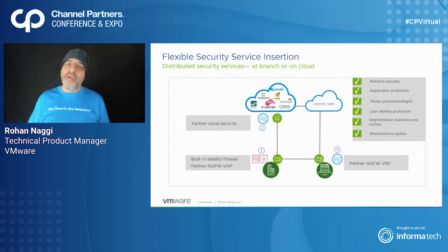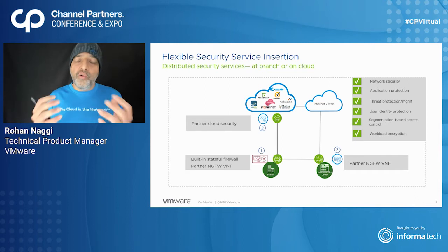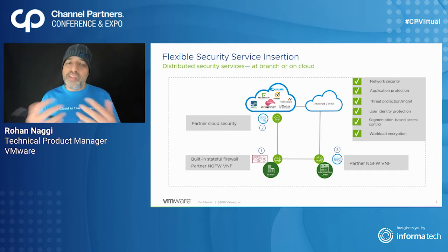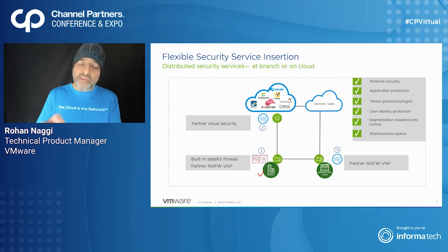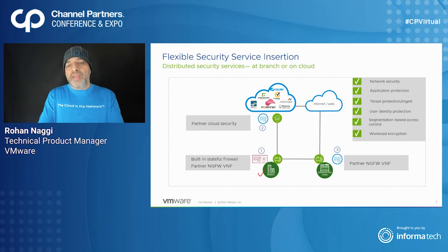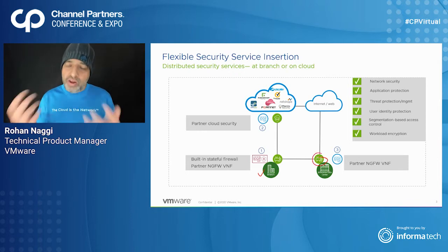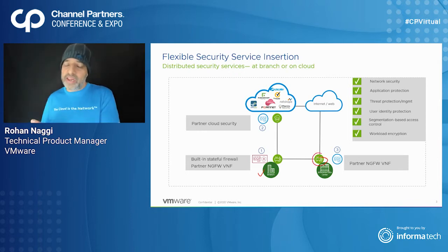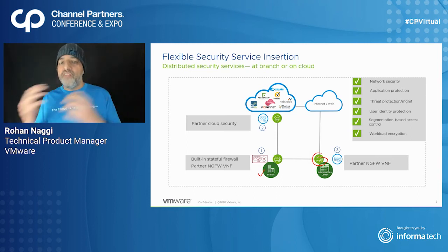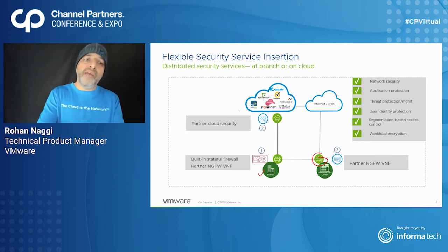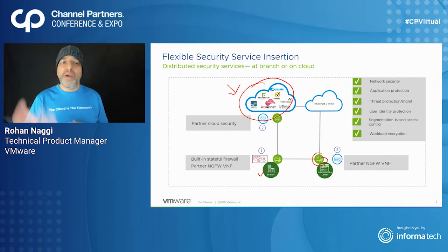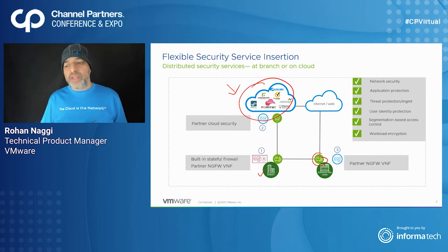With the VMware SASE solution available today, there is a stateful firewall integrated into the branches via the SD-WAN edge device, a next-generation firewall or third-party next-generation firewall at the data center where you can backhaul all user traffic from branch to data center. At the same time, VMware SASE has partnered with best-of-breed cloud security providers.